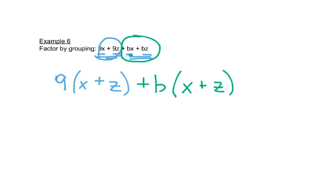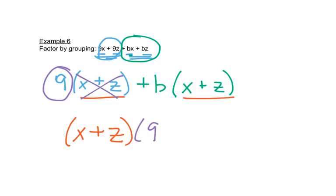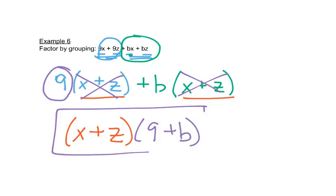Now this is like example 5 that we did a few minutes ago. They both have an x plus z, so we'll write x plus z first. Then we'll write what's left. If an x plus z is gone from here, then I have a 9 left, and if the x plus z is gone from here, then I have a b left. So this is my final answer.